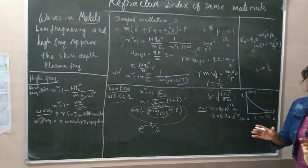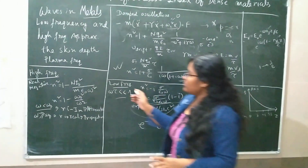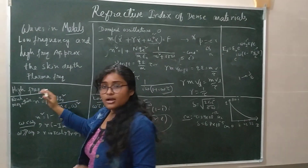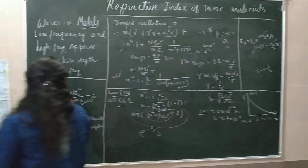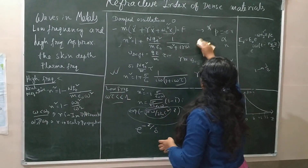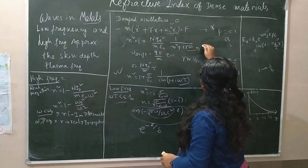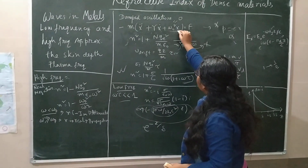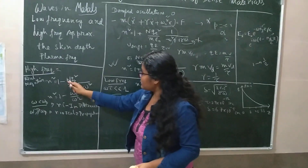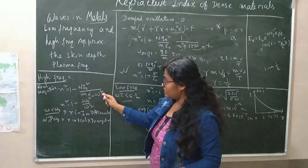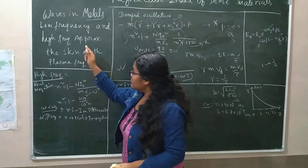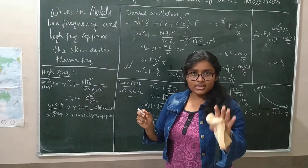The wave can penetrate the conductor only up to its skin depth. For the high frequency case, when the incident frequency is high, I neglect the damping term γ. This leaves n² = 1 − nqb²/(mε₀ω²). Notice there is no imaginary part in this expression.